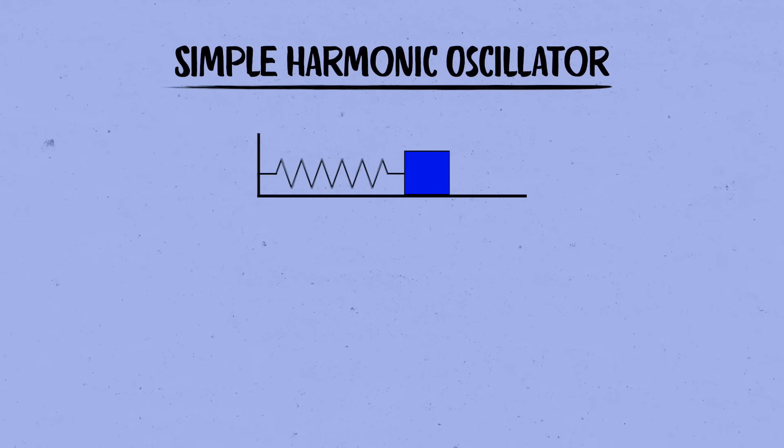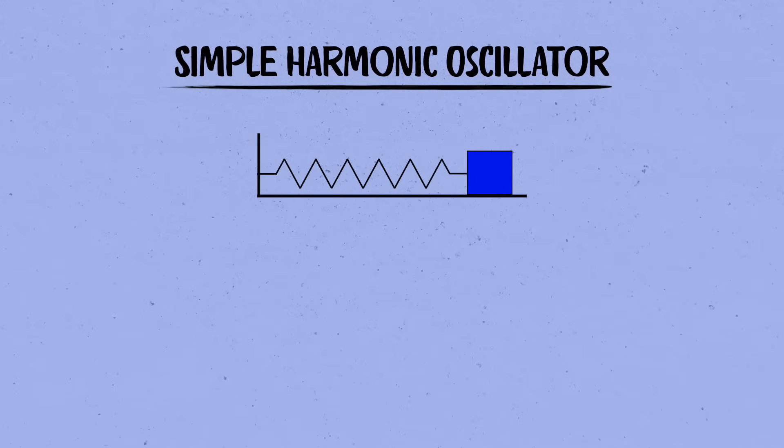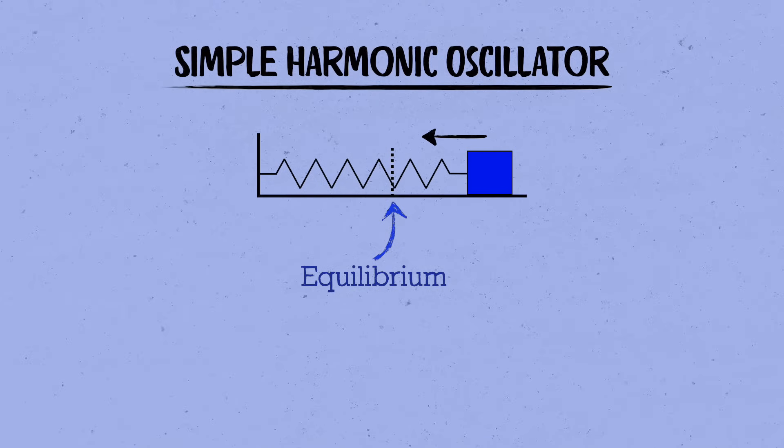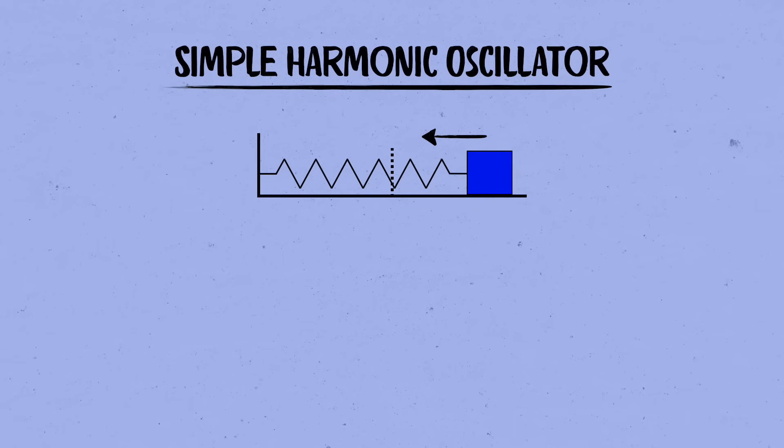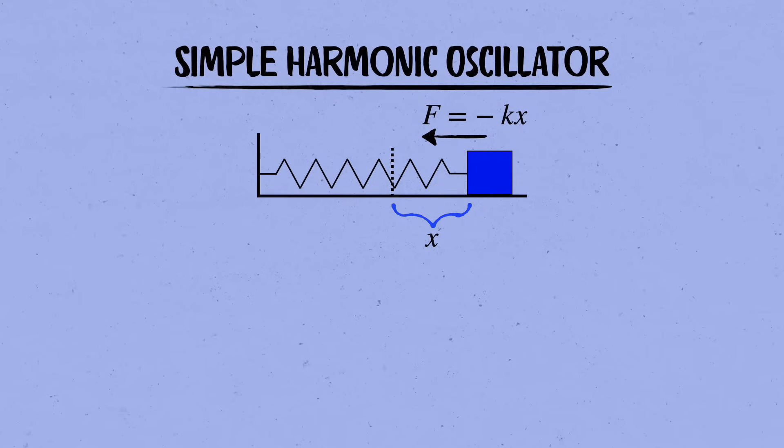Here's how we understand all this using Newton's laws. Whenever we move the block, we stretch or compress the spring, which therefore tries to pull or push the block back toward its equilibrium position. The equilibrium is the position where the spring is happy and relaxed. It's neither compressed nor stretched, and so it exerts no force on the mass. Say we stretch the spring away from equilibrium by a distance x. How hard the spring pulls the block back toward equilibrium will be proportional to x, as well as how stiff the spring is, which is measured by another parameter called the spring constant k. So the force is minus kx.